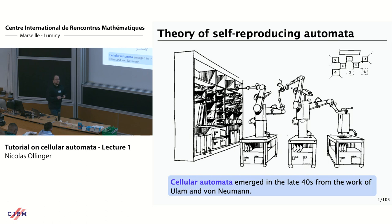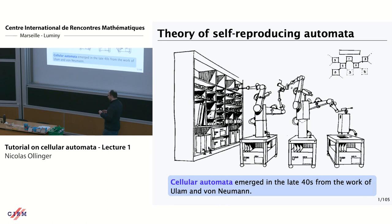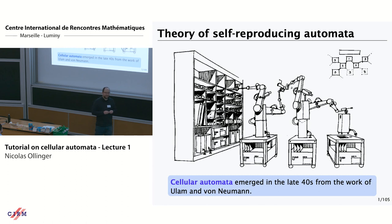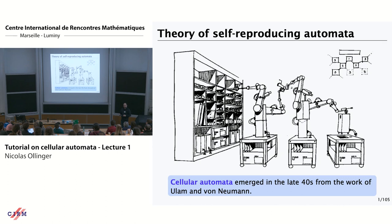Why did it emerge in the 40s? It's just after Watson and Crick's discovery on DNA. The idea of von Neumann is to have some kind of machine where there is some information inside — some information that would describe an object, but still small enough that it could fit inside the object itself, and be used as a description of the object.